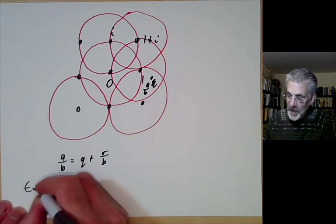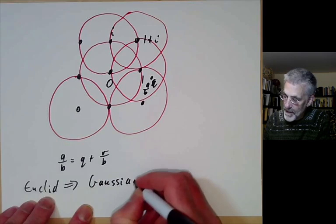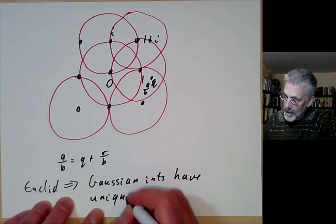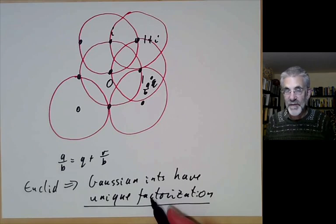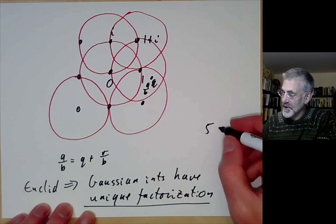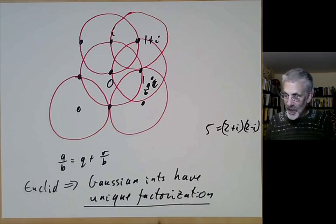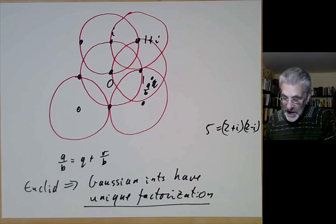Since we have Euclid's algorithm, we can copy the usual proof to show that Gaussian integers have unique factorization. A Gaussian prime is one that cannot be written as a product of non-unit Gaussian numbers. For example, 5 is not a Gaussian prime because 5 = (2+i)(2−i).